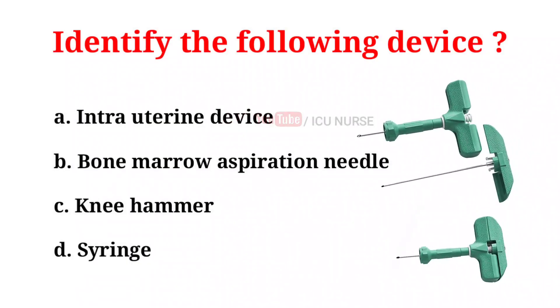Identify the following device. A. Intrauterine device. B. Bone marrow aspiration needle. C. Knee hammer. D. Syringe. And the correct answer is...